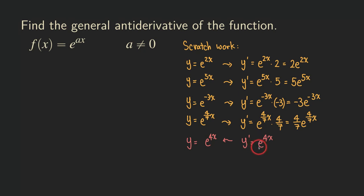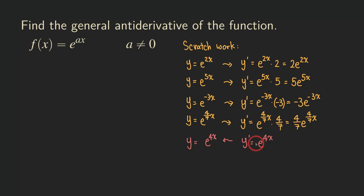If y equals e to the 4x, we get 4 times e to the 4x. To cancel that 4 which comes from the chain rule, we multiply by 1 over 4, so that the 4 and 1 over 4 cancel. That means we write y equals 1 over 4 times e to the 4x. Let's do a quick check — we differentiate 1 over 4 times e to the 4x and see if we get e to the 4x.